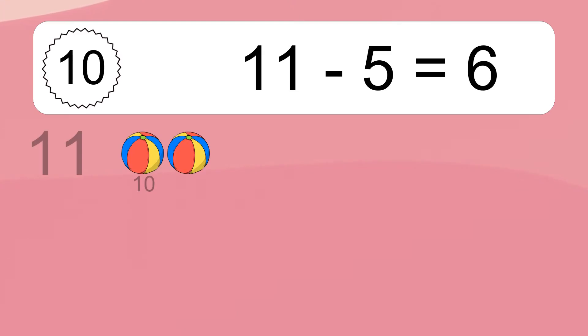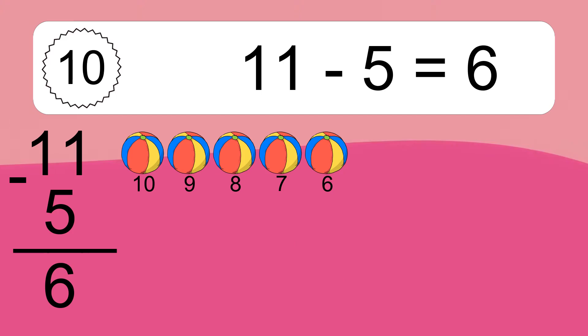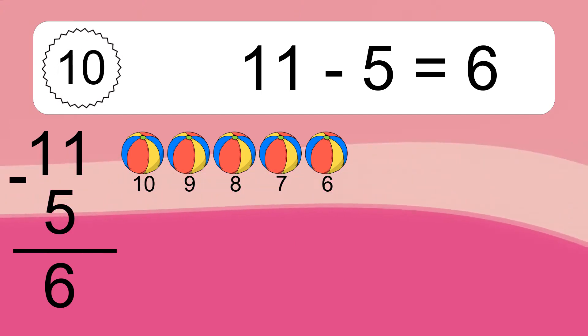11 minus 5 equals what? 11 minus 5 equals 6. Let's count it: 11, 10, 9, 8, 7, 6.